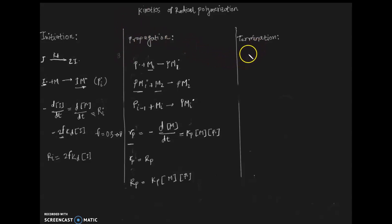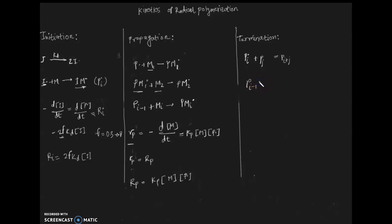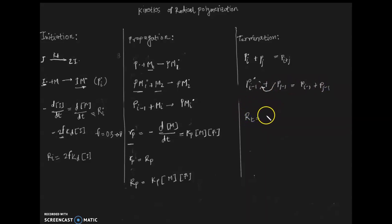In the termination step, there are two ways to stop the polymerization: combination and disproportionation. In combination, two polymer radical active centers come together and combine to form a dead polymer chain. In disproportionation, a hydrogen atom is shifted from one polymer radical to another, forming two dead polymer chains.